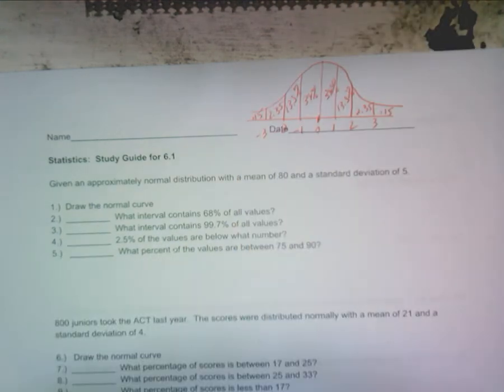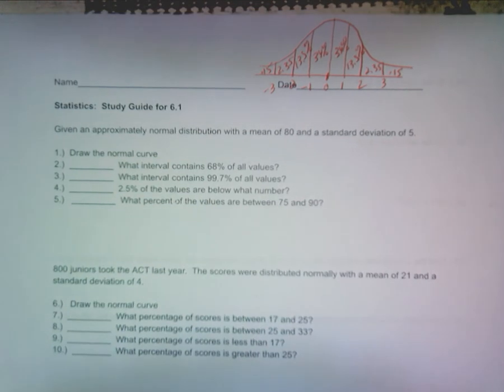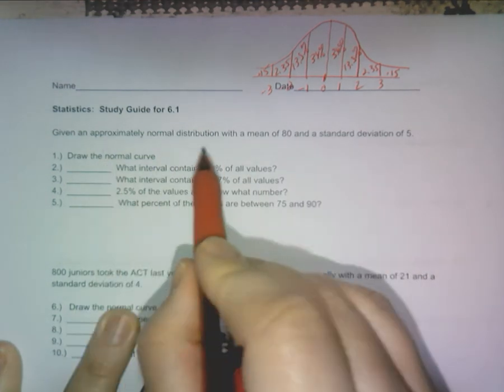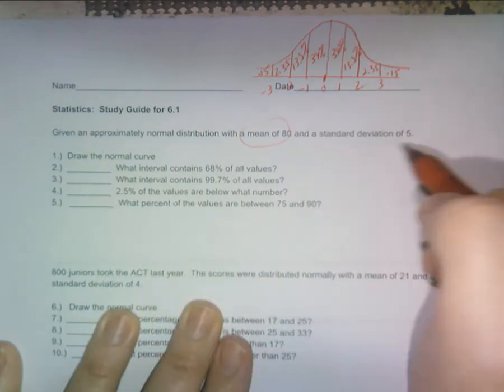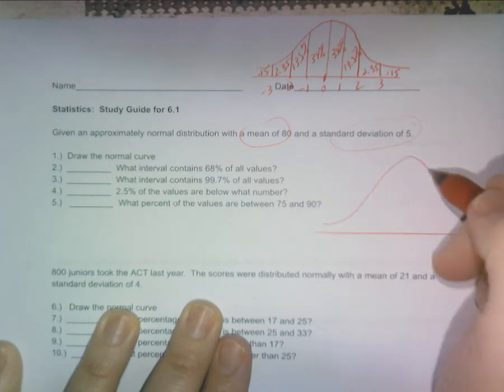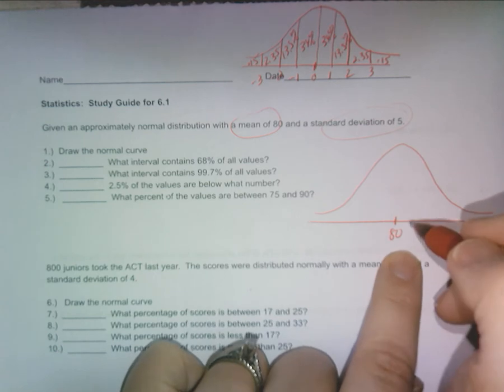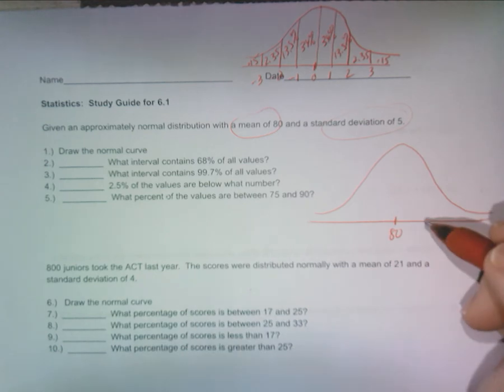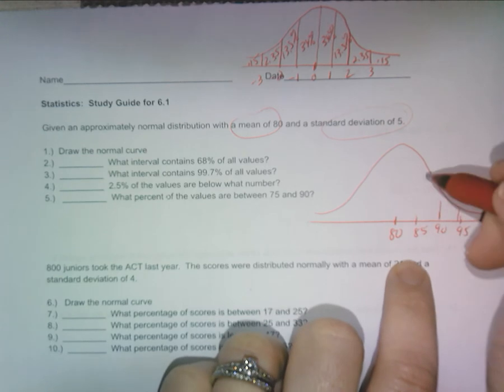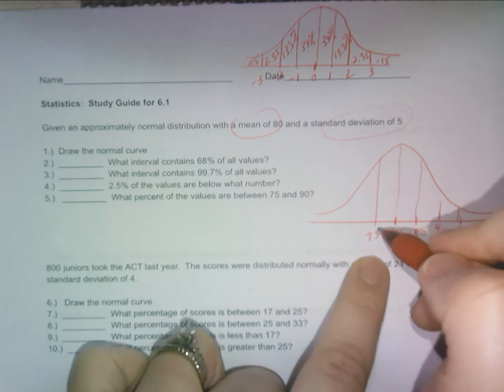Okay, and that is going to help you for these first questions here. So given an approximately normal distribution with a mean of 80 and a standard deviation of five, when you go to draw this, okay, mean goes in the middle, so 80. Standard deviation of five, you go three times above that, so 85, 90, 95, and then go three standard deviations below, so subtract five.